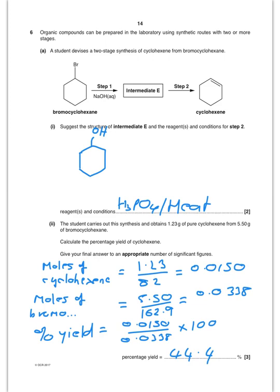So last question. First of all, intermediate E. Well you've reacted a haloalkane with NaOH aqueous. So you're going to make an alcohol there. And how do you do step two? Well you've taken an alcohol and made an alkene. So that is phosphoric acid catalyst and heat.